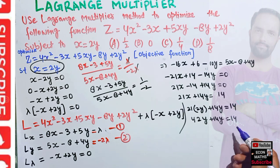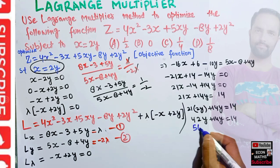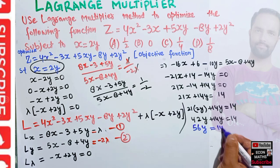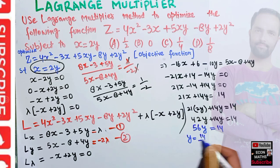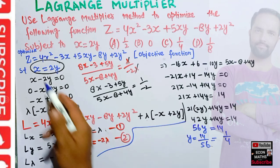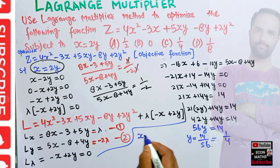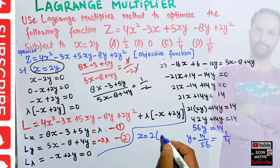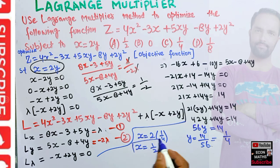So 56y = 14, which gives y = 14/56 = 1/4. The optimal value of y is 1/4. To find the optimal value of x, we use x = 2y, so x = 2 × (1/4) = 1/2. We now have our optimal values: x = 1/2 and y = 1/4.